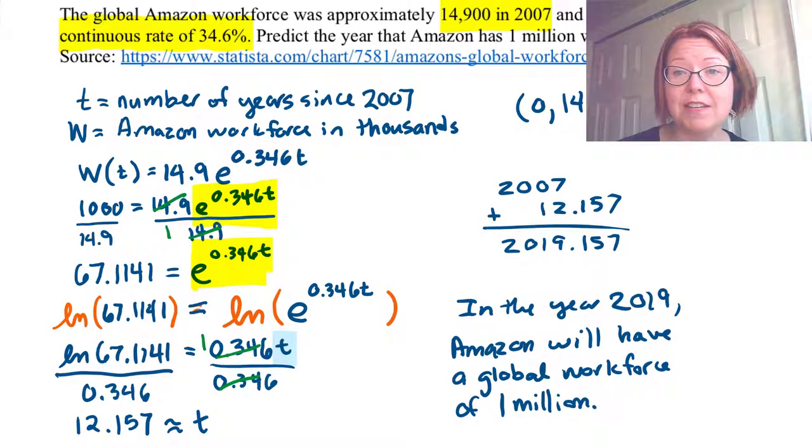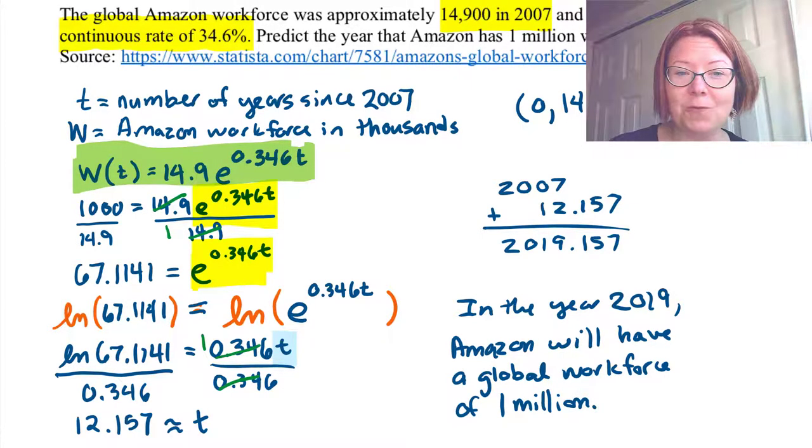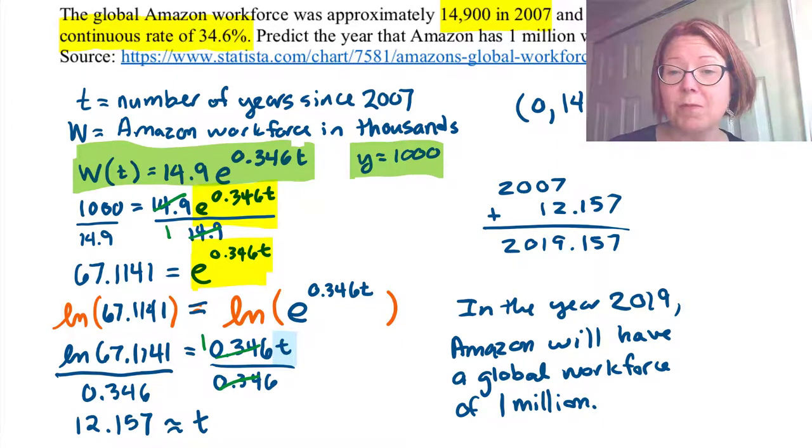Now certainly we could also check this by putting the equations into Desmos. I would take this equation right here, W(t) equals 14.9e^(0.346t), and then also graph y equals 1,000 to see where the number of workers equals 1,000. And look at the intersection points for those two and make sure that it makes sense. Make sure that you get 12.157. Let's look at the next problem.